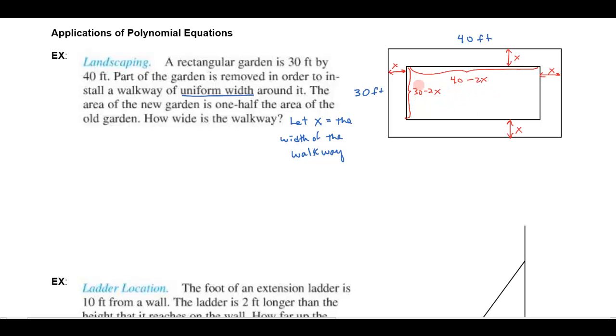So I know an area, it's easy to find an expression now for the area, it's going to be the width times the length. And it also tells me here in the problem that the area of the new garden is half the area of the old garden. Well the area of the old garden was 30 by 40, 30 times 40 is 1200. So that means the area of the new garden is going to be 600. So I know that this area in here is going to be 600.